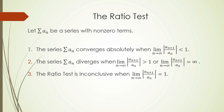We're going to let a sub n be a series with non-zero terms. The first component of the ratio test is that the series converges absolutely when the limit as n goes to infinity of the absolute value of the ratio of a sub n plus 1 over a sub n is less than 1. We say that the series diverges when that same limit is greater than 1 or has a value of infinity.